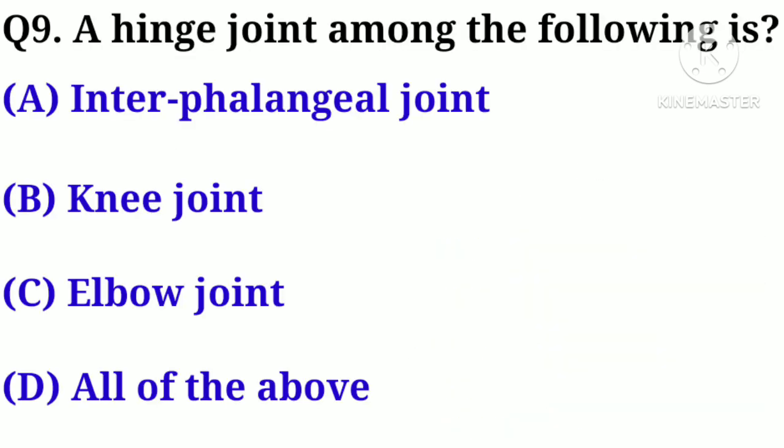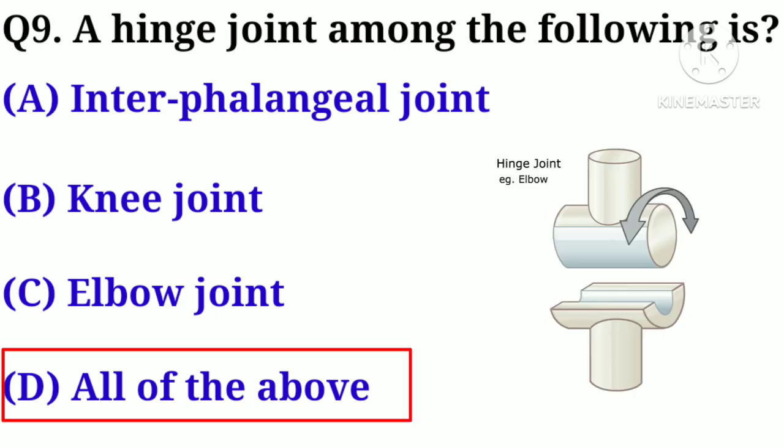Q9. A hinge joint among the following is: A. Interphalangeal joint, B. Knee joint, C. Elbow joint, D. All of the above. Answer: D. All of the above.